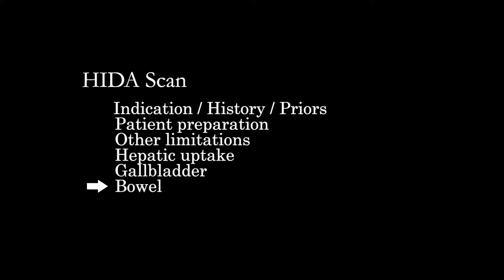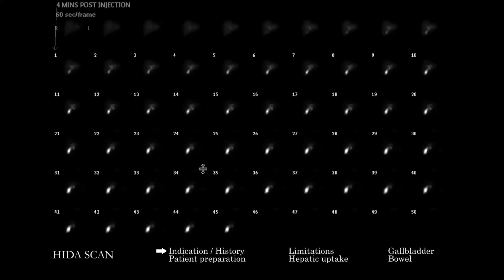As we bring up the study, it's really important to understand the clinical context. Is it acute cholecystitis? Is there some sort of suspected issue of the common bile duct or at the ampulla? Understanding the clinical question is essential before diving into image interpretation.